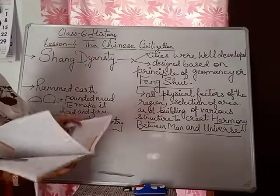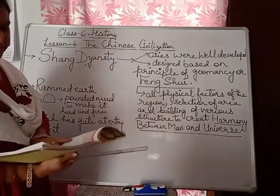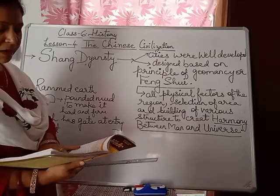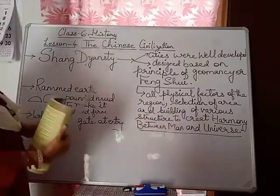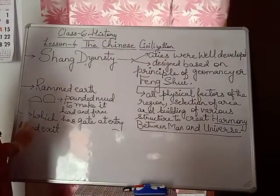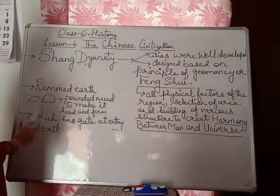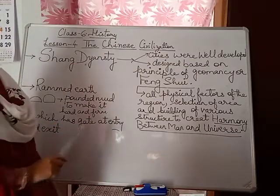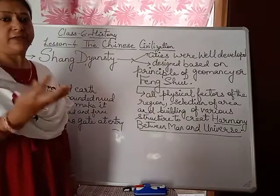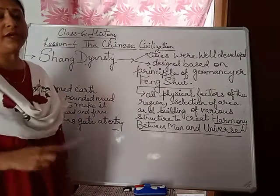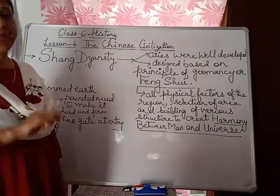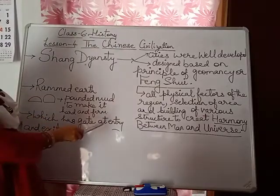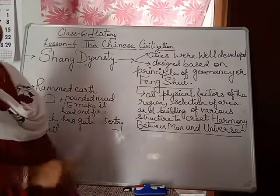The cities were built with boundary walls of rammed earth. Rammed earth means pounded mud made hard and firm. They used to compact it by hand and place it at the entry and exit points of the city, which had gates for entry and exit.